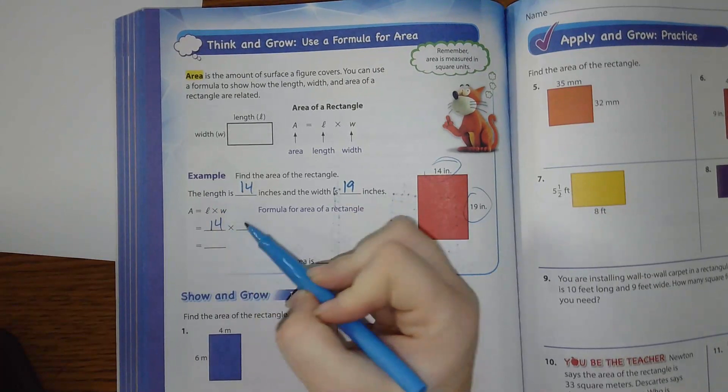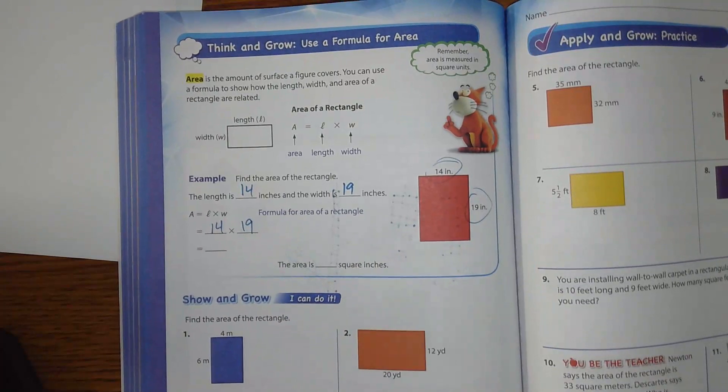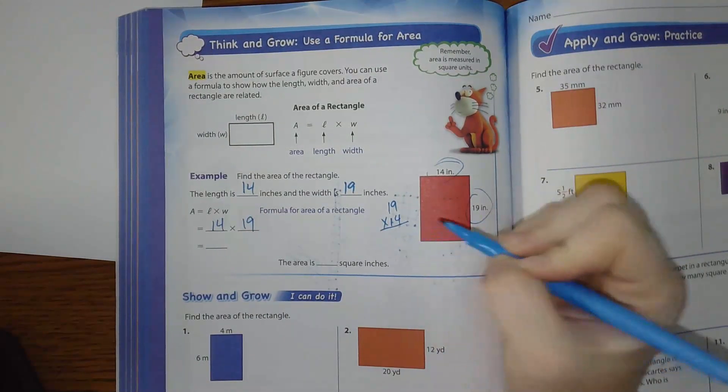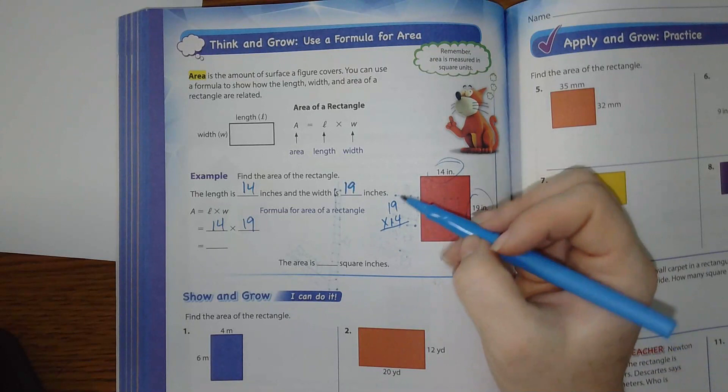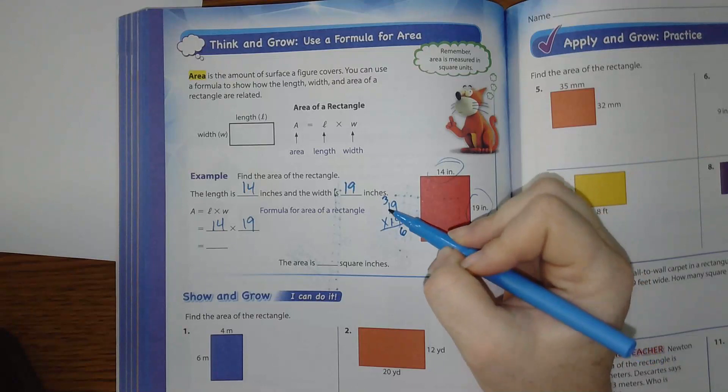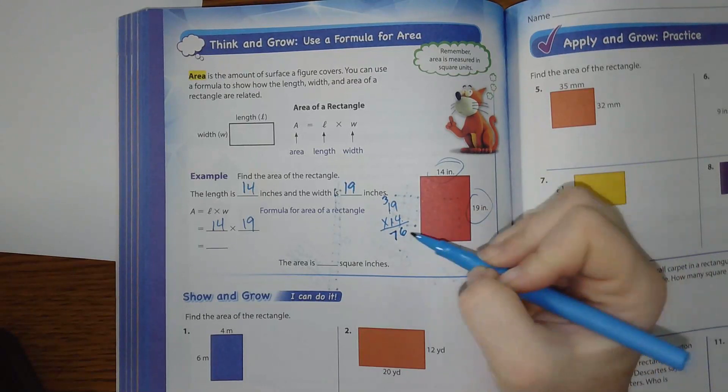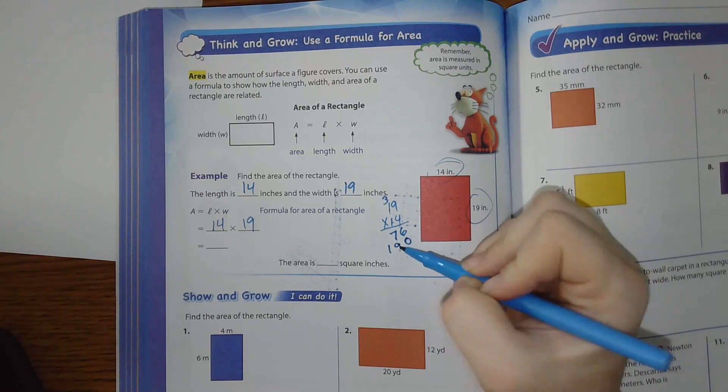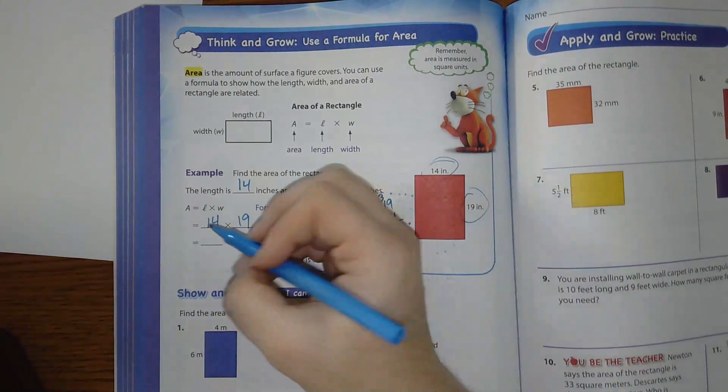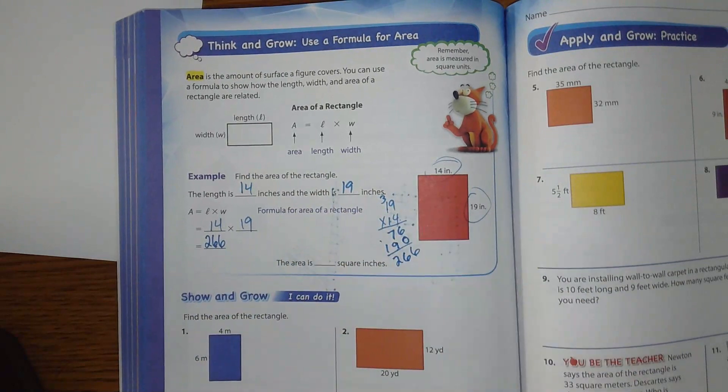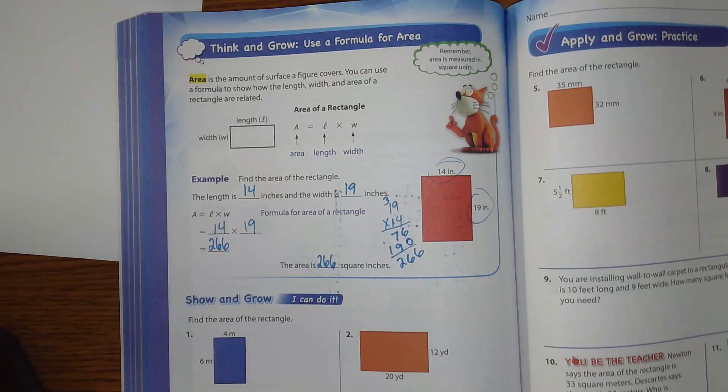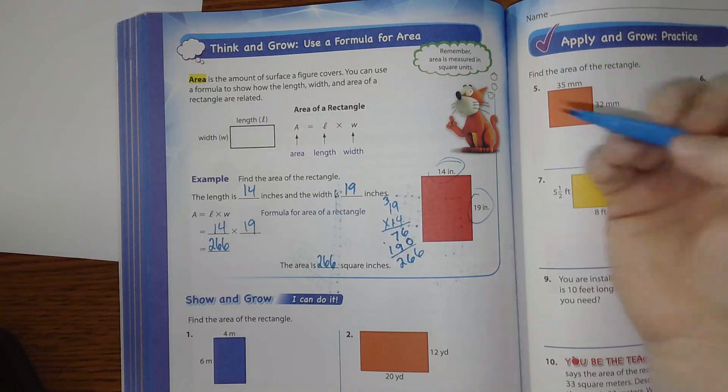Area equals length times width. And then we have to multiply it out. We know that 19 times 14. We can do that by multiplying it the old way. We can do 4 times 9 is 36. 4 times 1 is 4. Plus 3 is 7. We're going to have our placeholder. 1 times 19 is 19. So 14 times 19 is 266. The area is 266 square inches. And then 1 times 1 puts 1 plus 3 is 4. Yeah. So that's a great way to do it.